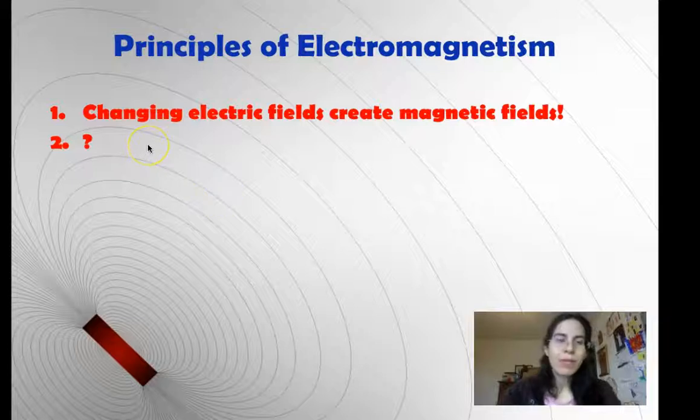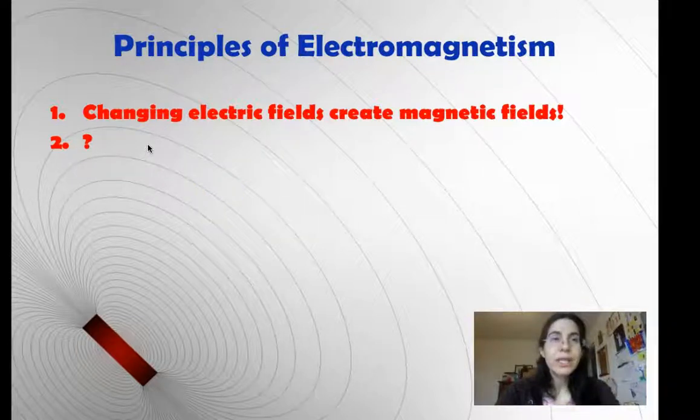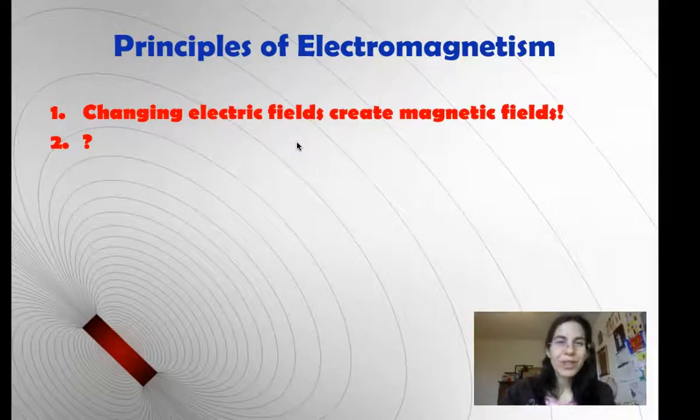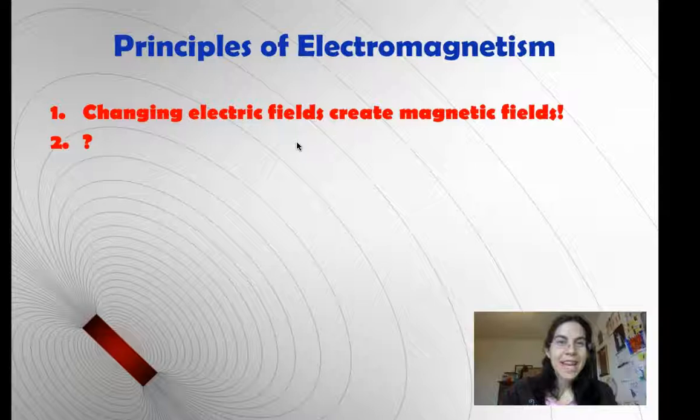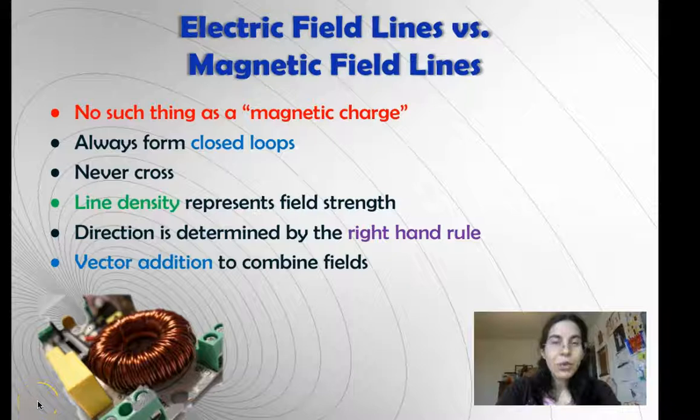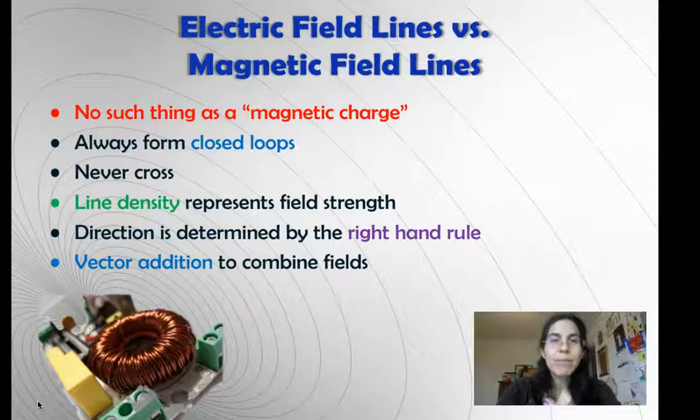However, there's a second principle of electromagnetism that once Orsted knew what he was looking for, he found it incredibly easy to discover, and that's why I like this version. Changing electric fields create magnetic fields. In the next lecture, we'll look for another principle to keep this one company, see if you can hypothesize what it is. Now that we have two kinds of field lines, it's important to be clear on the differences between them.